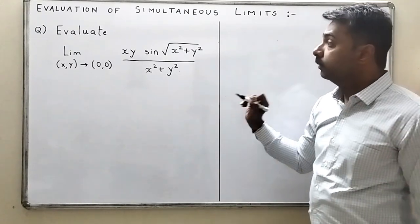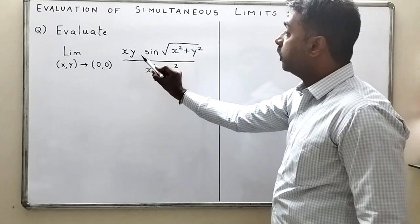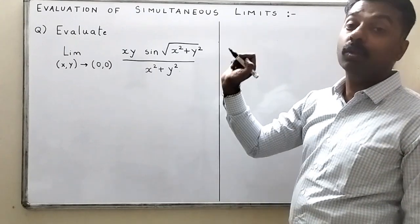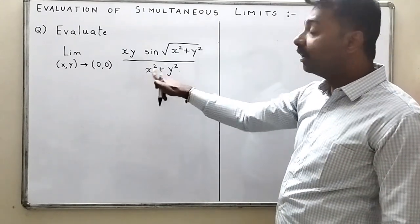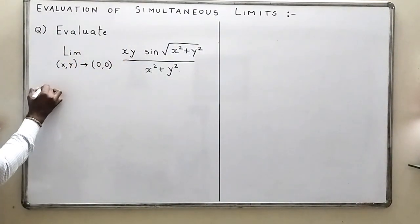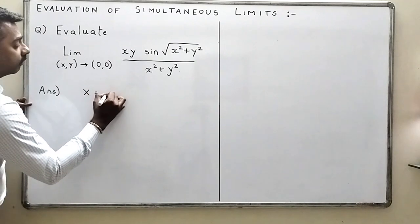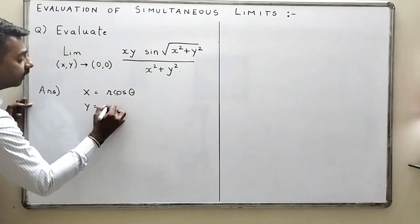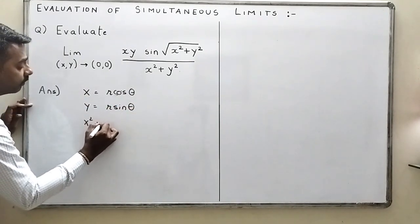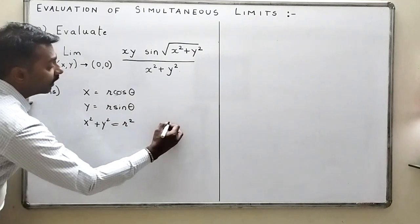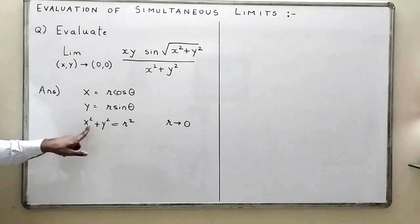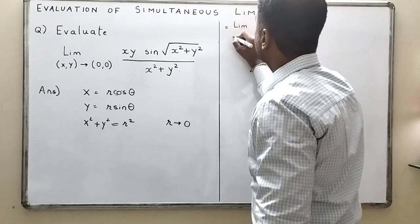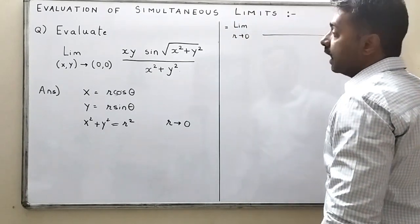Now let's evaluate the next limit: (x,y) → (0,0) of xy · sin(√(x² + y²)) / (x² + y²). We will again use the polar form trick. Whenever you see x² + y², substitute x = r cosθ, y = r sinθ. Then x² + y² is replaced by r², and r → 0 since x and y both tend to 0.